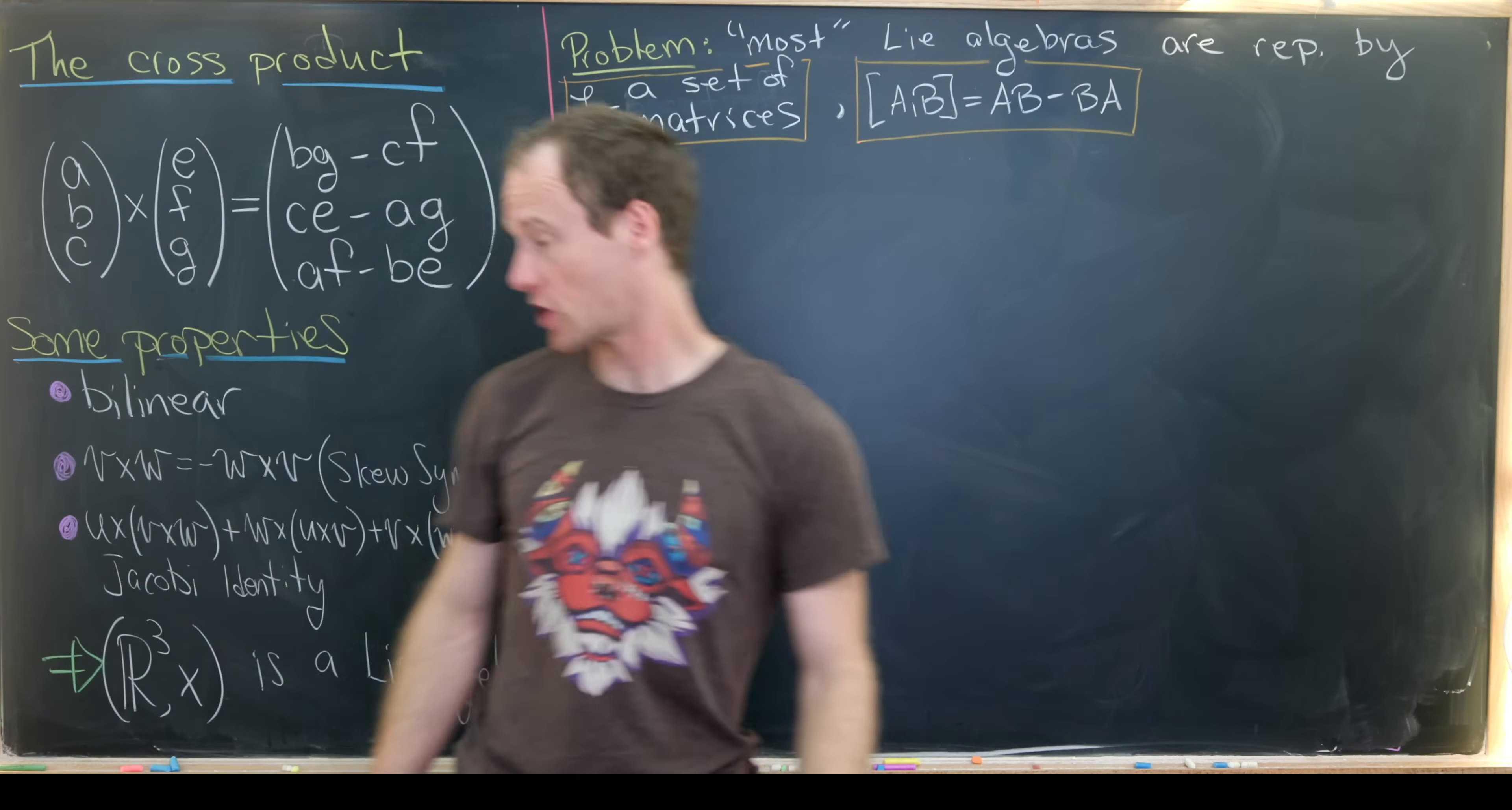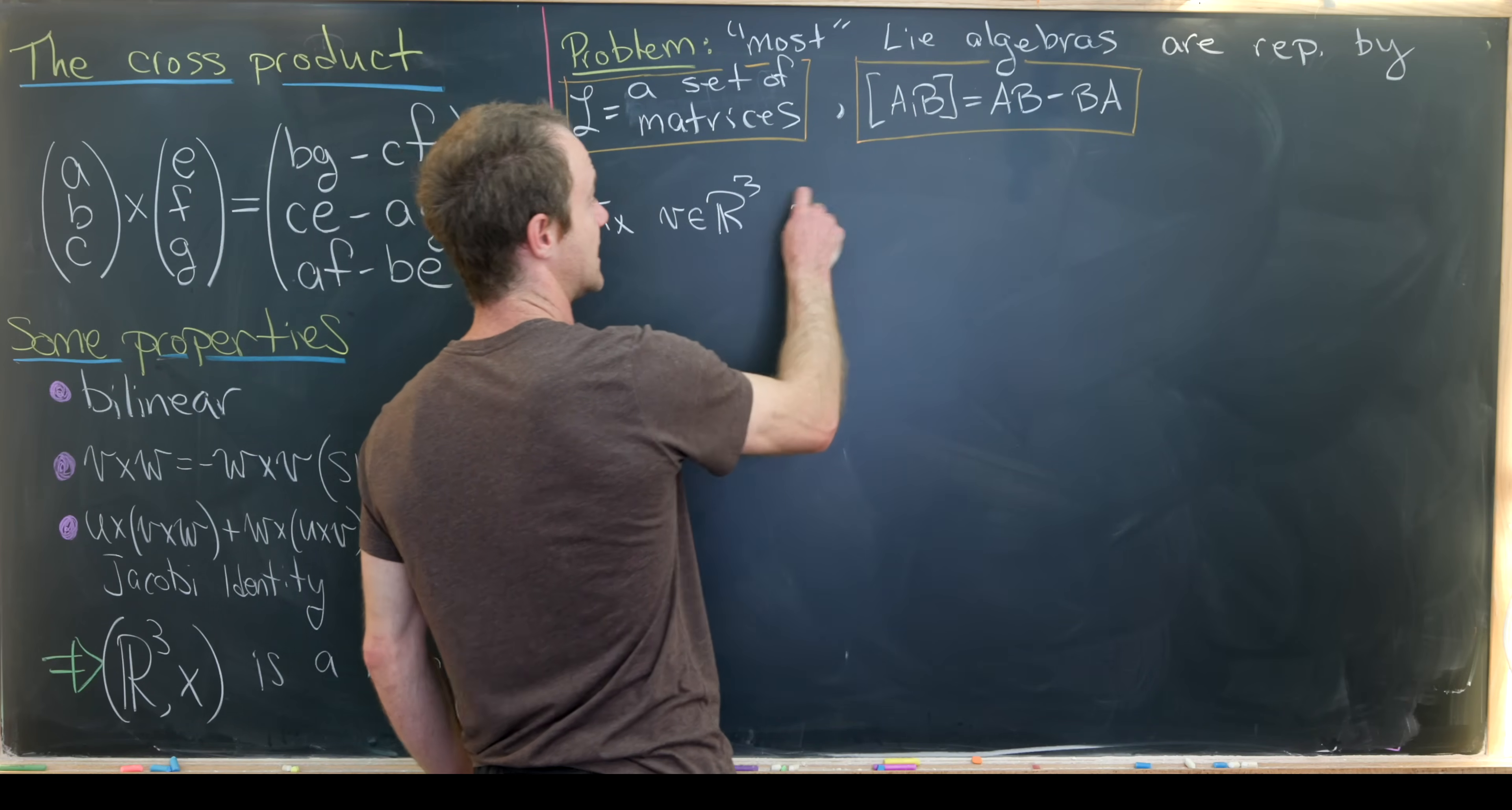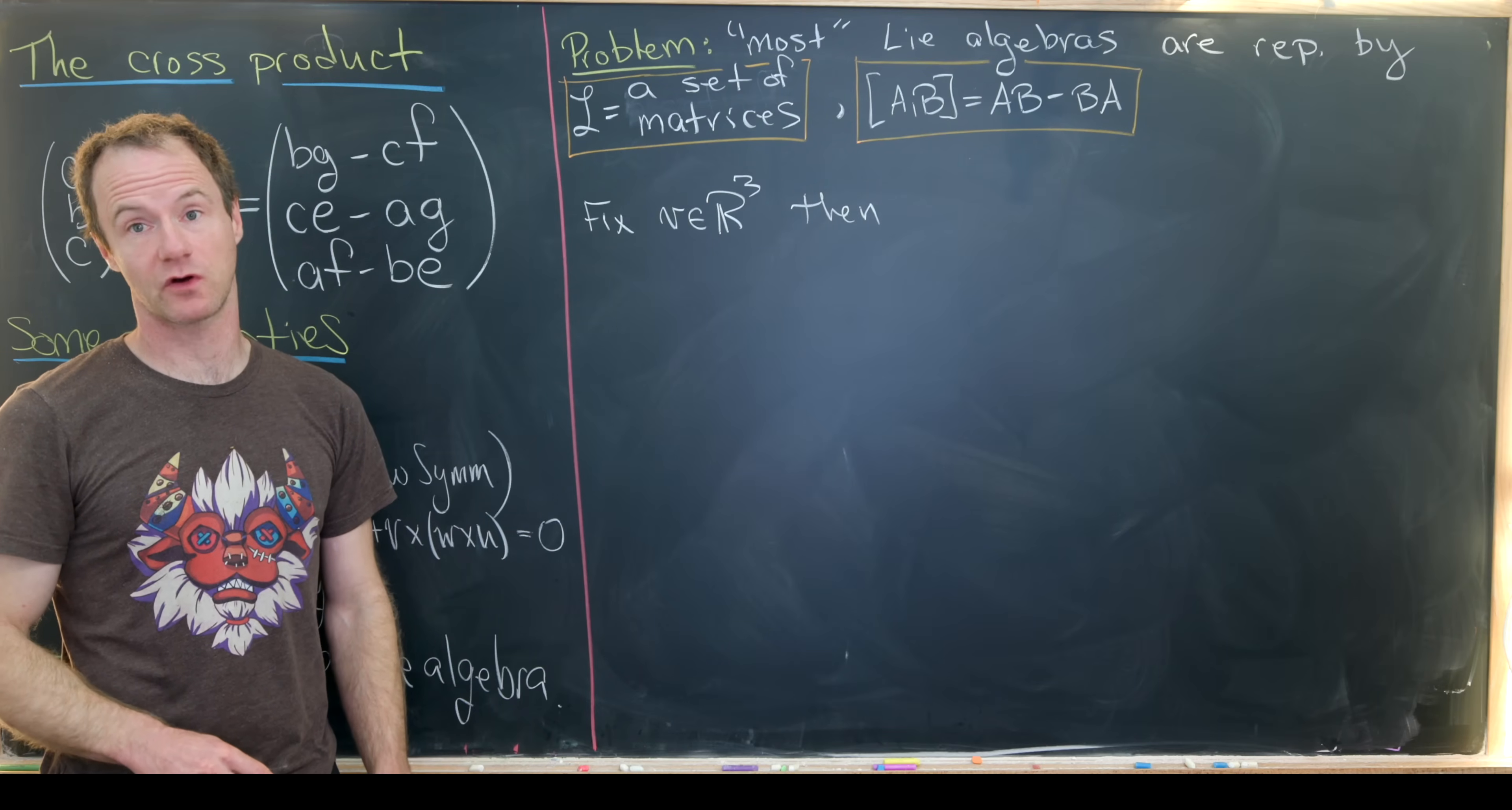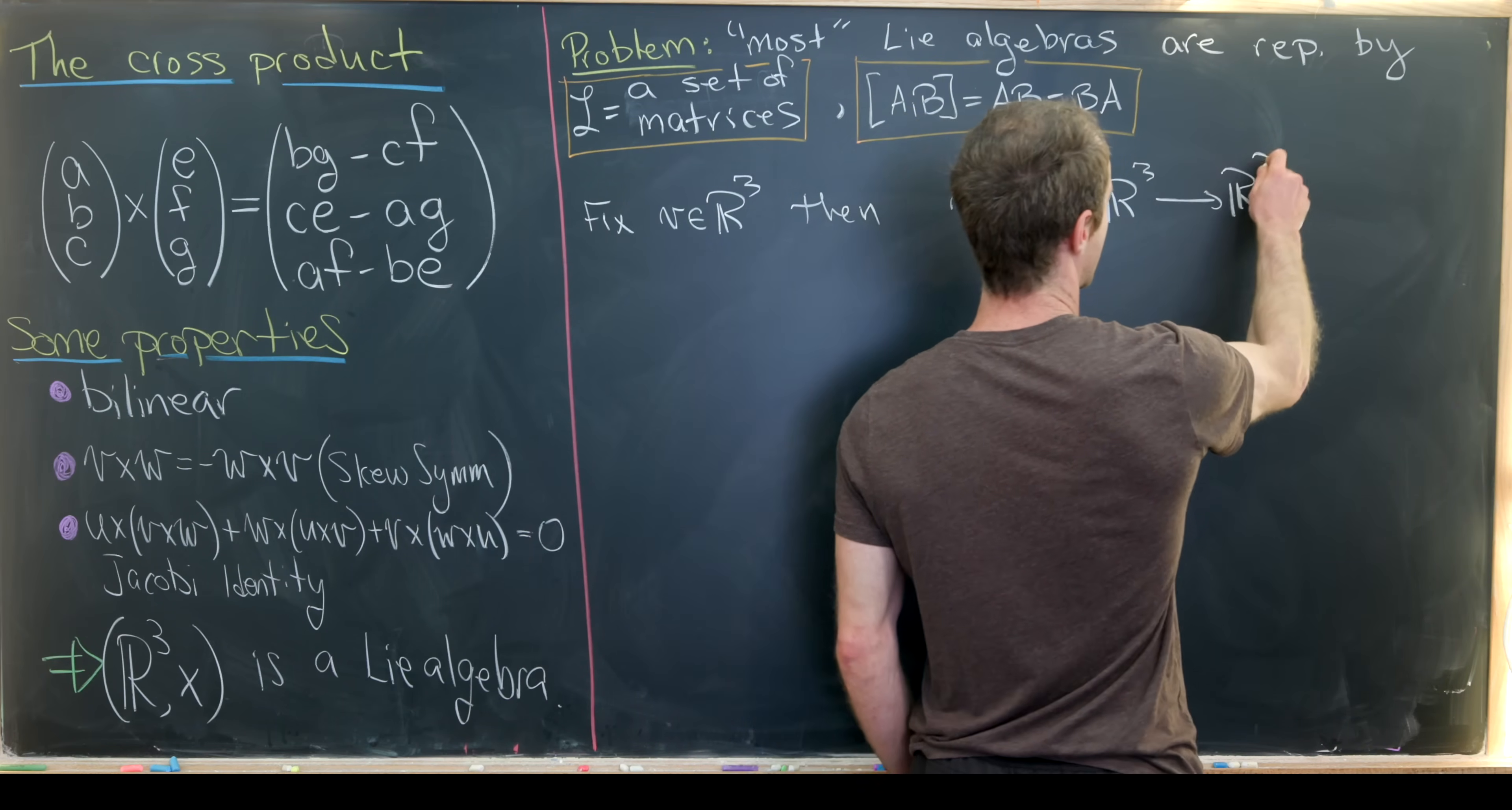Well, we'll start with the fact that this is a bilinear map. And so since this is a bilinear map, if we fix some vector V in R3, then we have a nice linear transformation from R3 to R3 defined by left cross product multiplication by V.